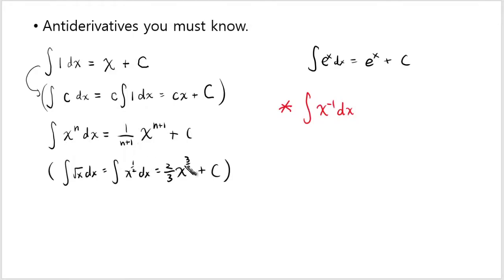So this one here is actually allowed only when n is not equals to negative 1. If n is indeed negative 1, then what you need to do is first rewrite this as 1 over x. And if you have 1 over x, well, what differentiates to 1 over x? That's ln of x, right?